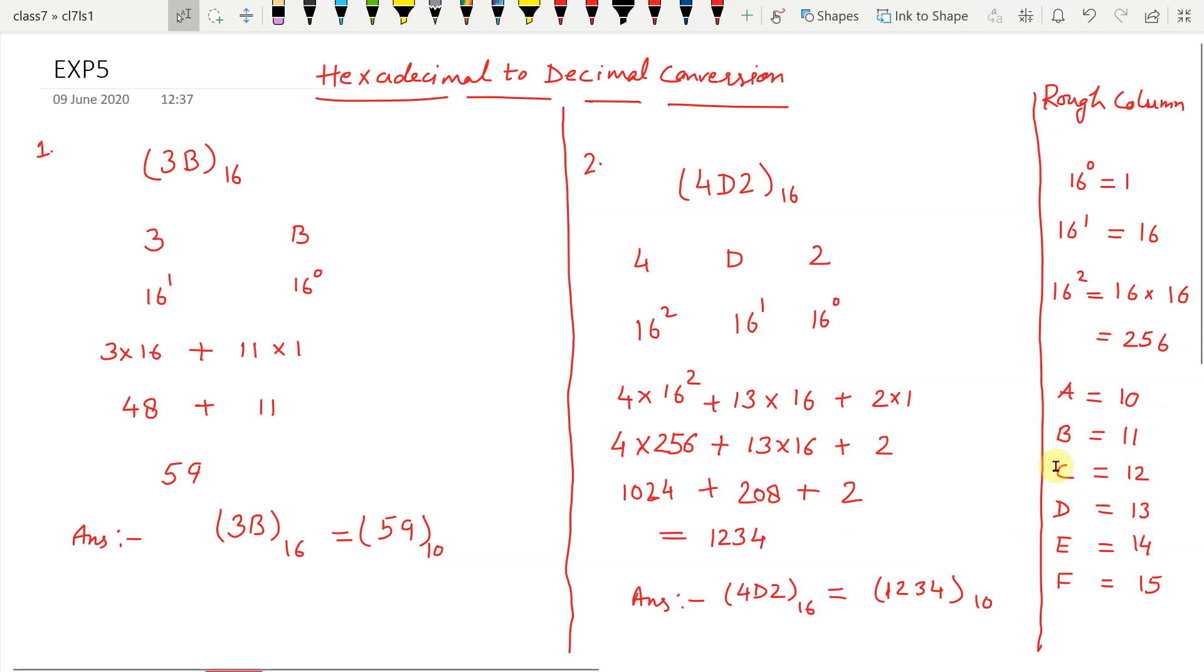See in this table, value of A is 10, B is 11, C is 12, D is 13, E is 14 and F is 15.